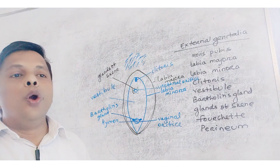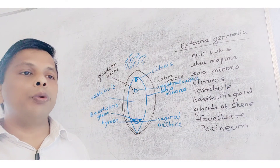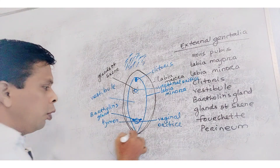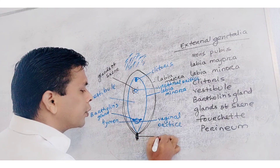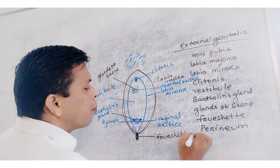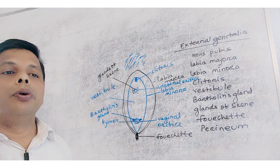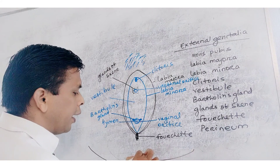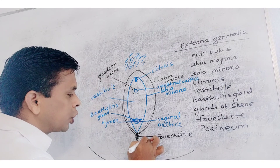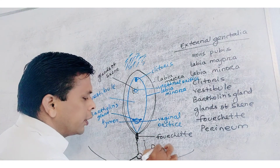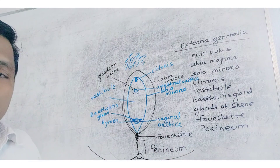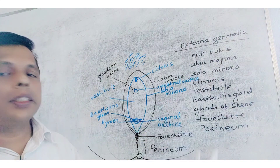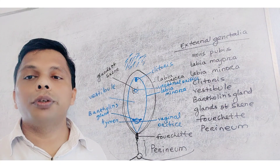At the lower junction of labia minora, it produces a fold called as fourchette. From the fourchette to the anus, a distance lies — this distance is called as perineum. So it is all about the external genitalia of the female reproductive system. All these parts are associated with different types of functions of the female reproductive system. Thank you all.